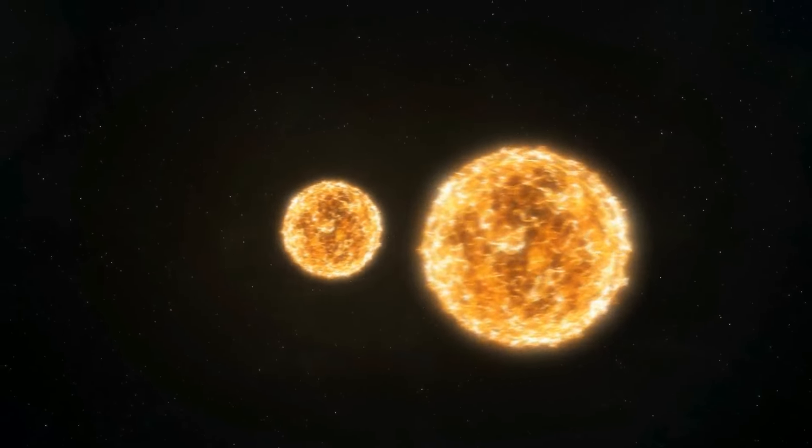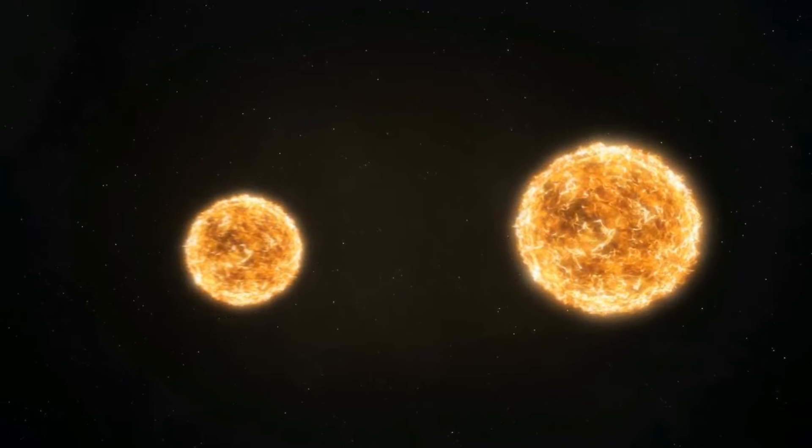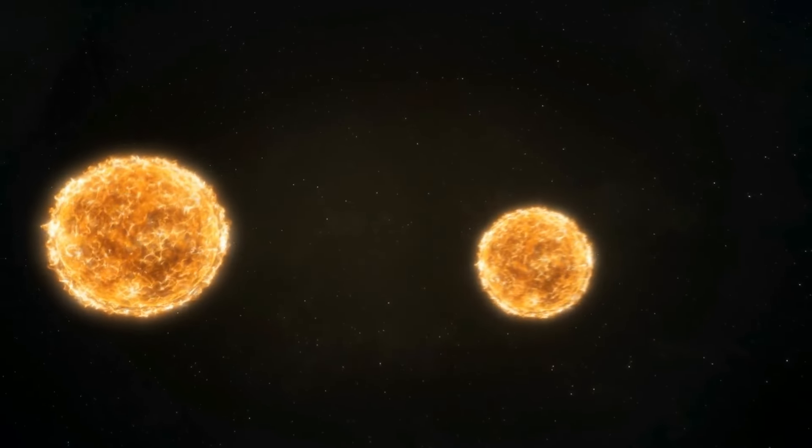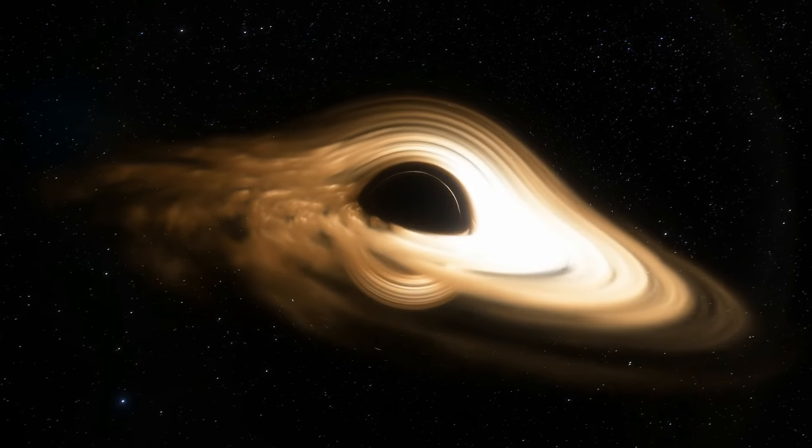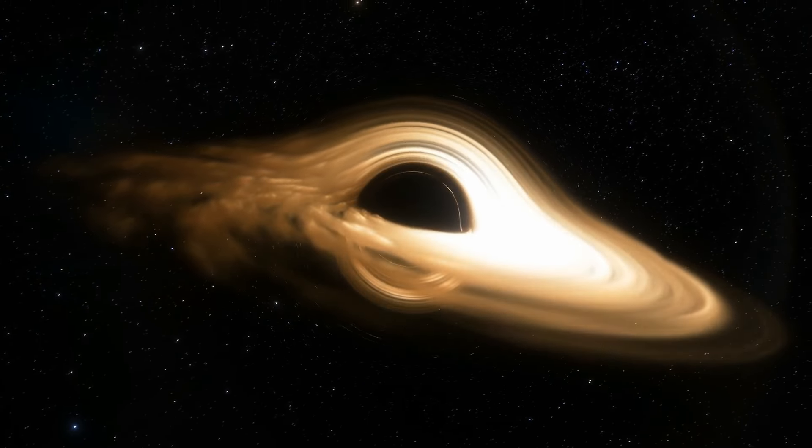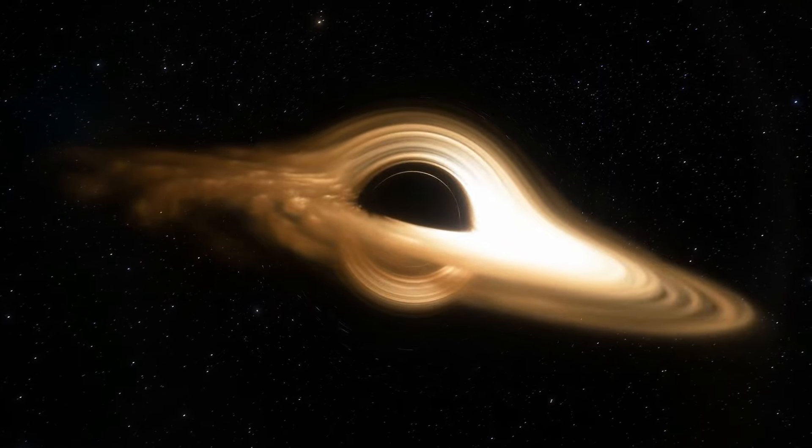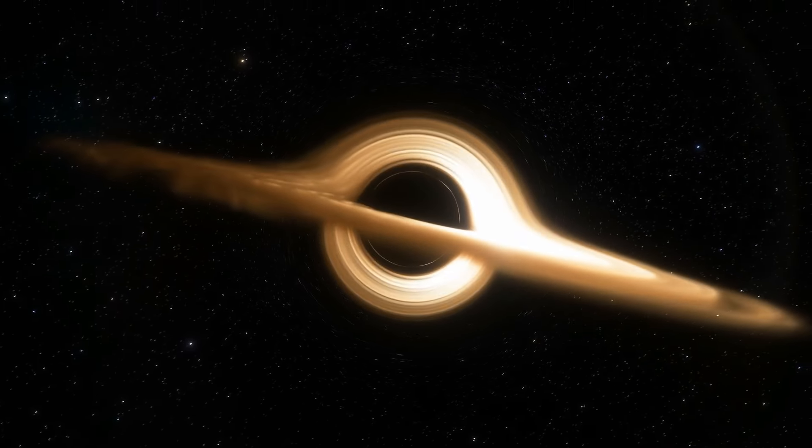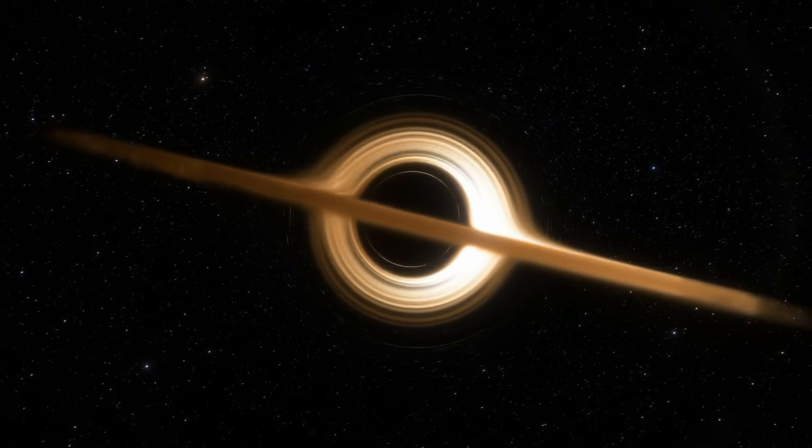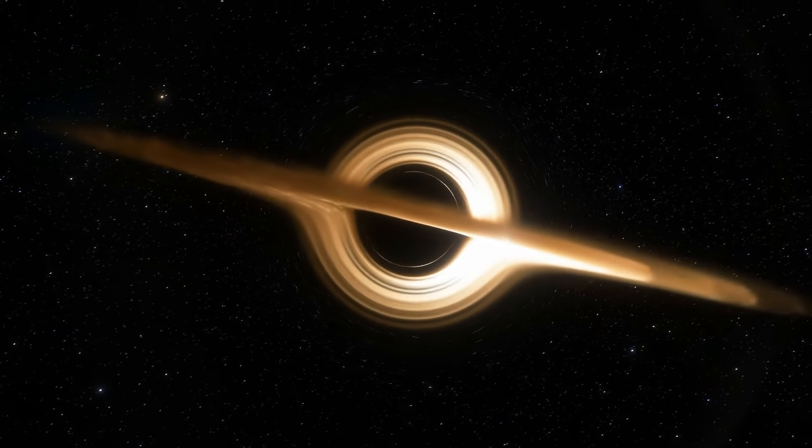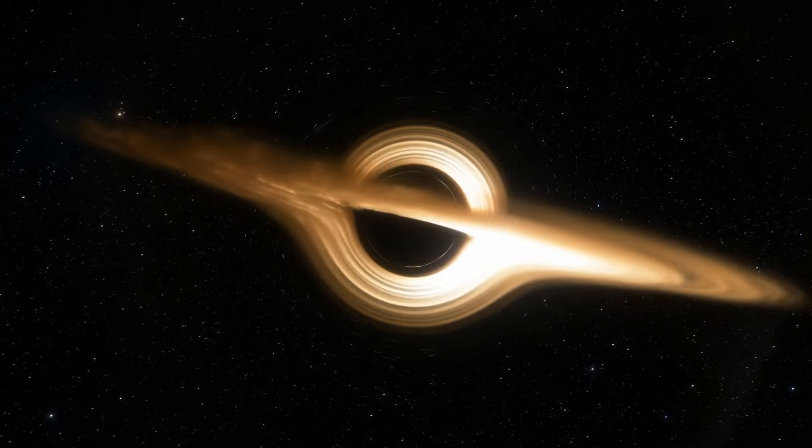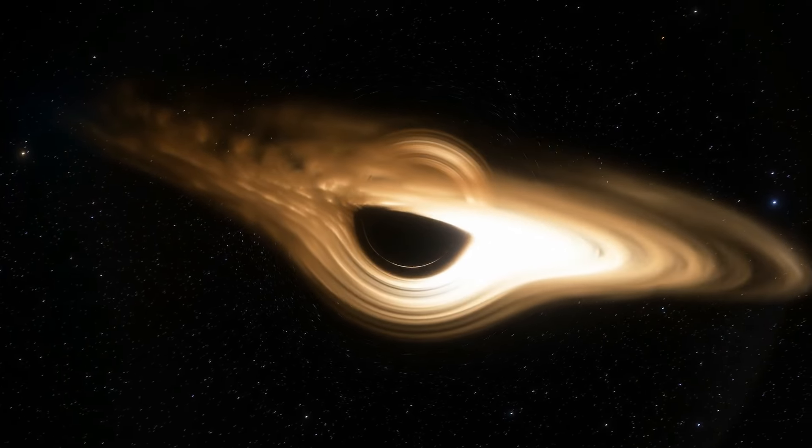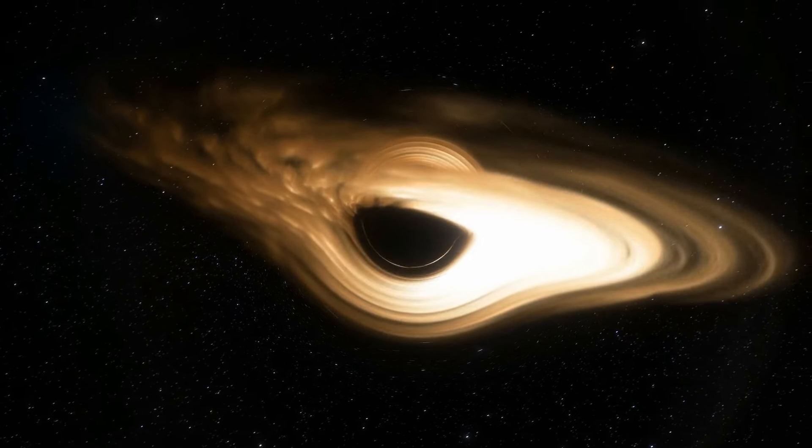This boost is often provided by the dynamic interactions within a binary star system as they come dangerously close to the black hole. As one star is captured by the black hole's gravity, the other star is flung outward. The mechanics of this slingshot effect are governed by the conservation of momentum and energy within the system. The sudden loss of its companion allows the remaining star to inherit a significant portion of kinetic energy, propelling it at velocities sufficient to escape the galaxy.